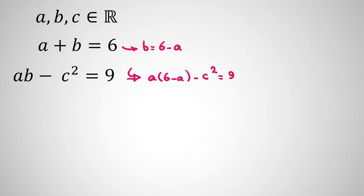In next step, we try to simplify. It will be 6A minus A squared minus C squared equal to 9. Now, we take all things to right-hand side. It will be A squared minus 6A plus 9 plus C squared.